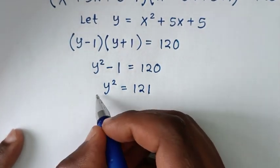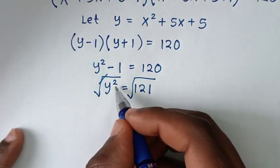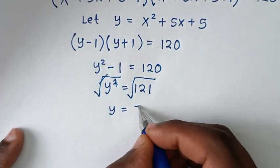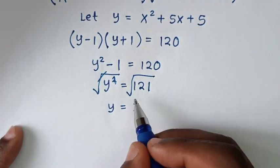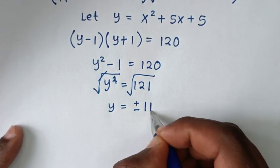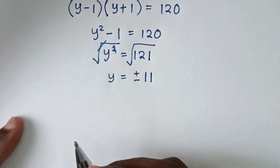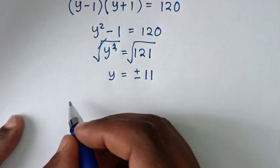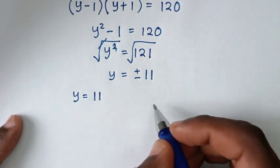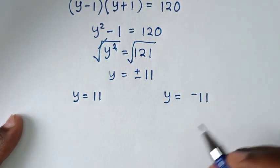Then from here we will apply square root on both sides. The square root cancels the square, so y equals plus or minus square root of 121, which is plus or minus 11. So we have two solutions: y equals positive 11, and y equals negative 11.